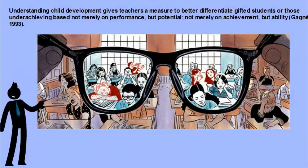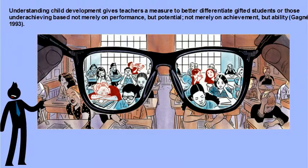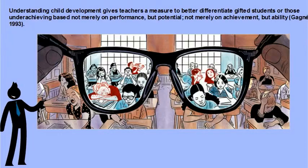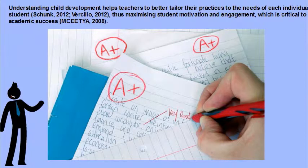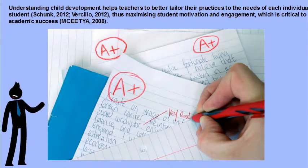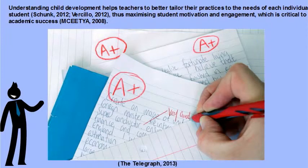Understanding child development gives teachers a measure to better differentiate gifted students or those underachieving, based not merely on performance but potential, not merely on achievement but ability. It also helps teachers to better tailor their practices to the needs of each individual student, thus maximizing student motivation and engagement, which is critical to academic success.